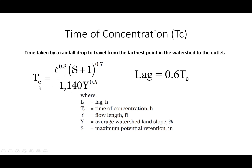To get the time of concentration, we need to know L, which is the maximum flow length within a sub-basin. S is the maximum potential retention used in the curve number method, and the expression for S is 1000 divided by curve number minus 10. This S uses the curve number, which we already have for each sub-basin.